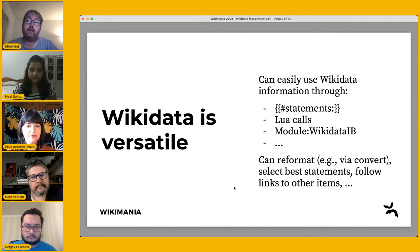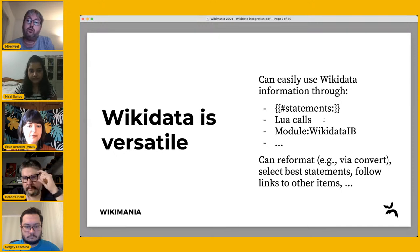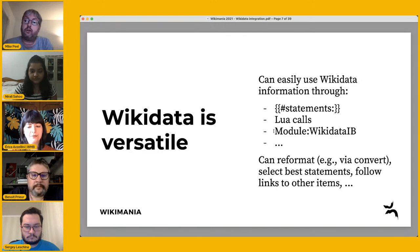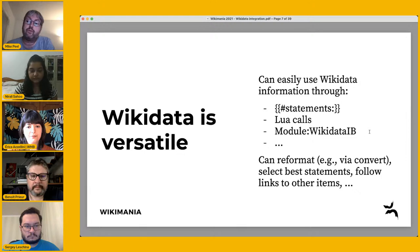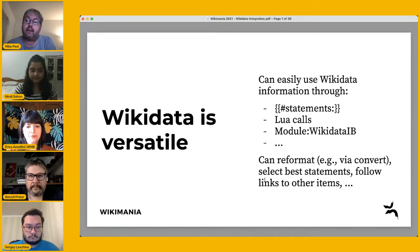Wikidata information can be accessed through multiple ways. The native way is through statements as a parser function. You can also use Lua calls — write a module in Lua which calls Wikidata, brings information in, and formats it. Or you can use pre-existing modules like Module:Wikidata IB — IB for infoboxes — but it can also be used much more generally. You specify what information you want from Wikidata, reformat it, and put it directly into the article, using convert or other templates as well.